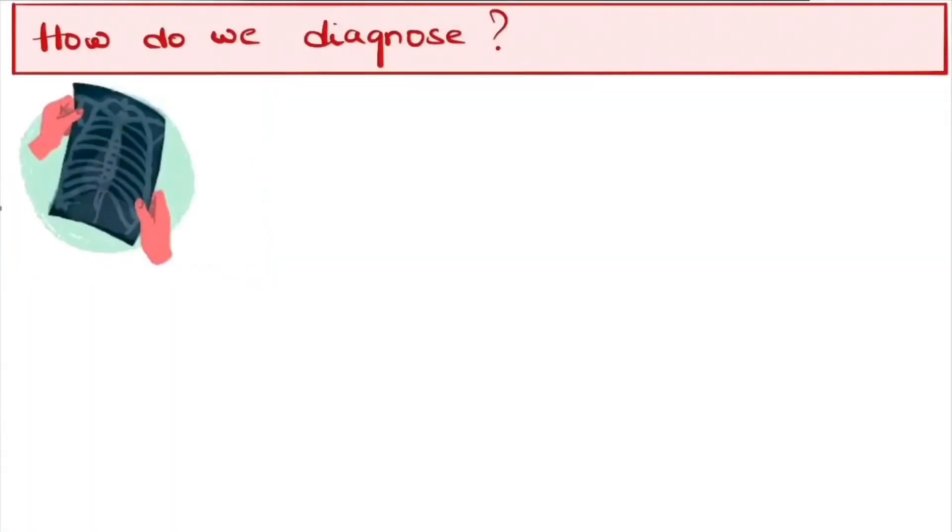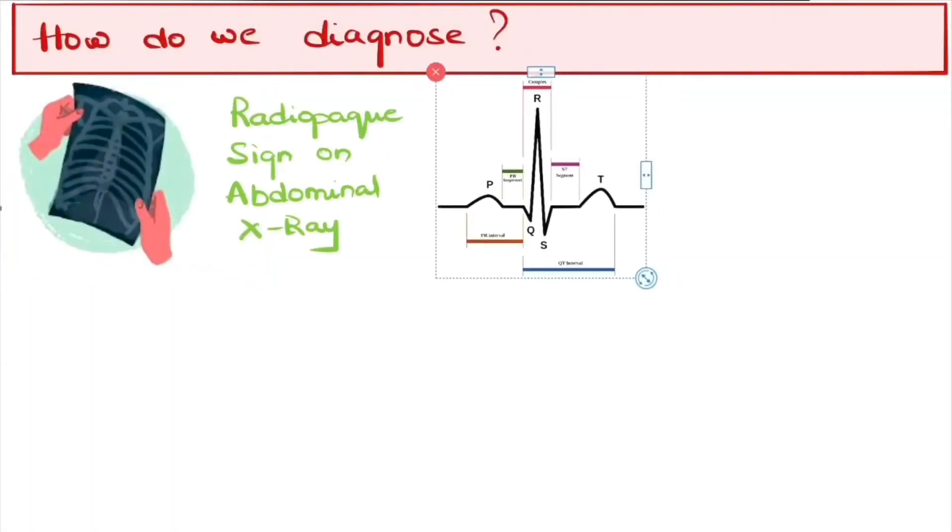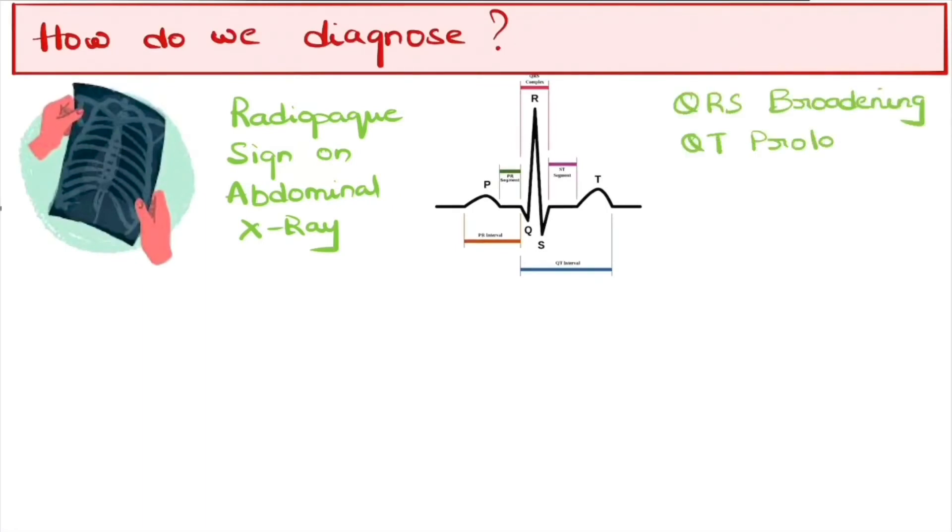Radio-opaque signs on the abdominal x-ray is the first indication. When taking an ECG, the QRS broadening is seen along with QT prolongation, ST depression, and T wave flattening.